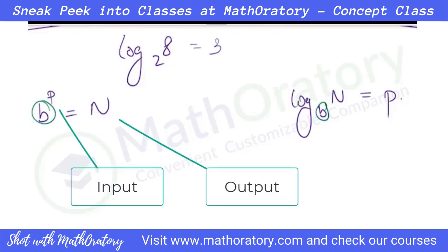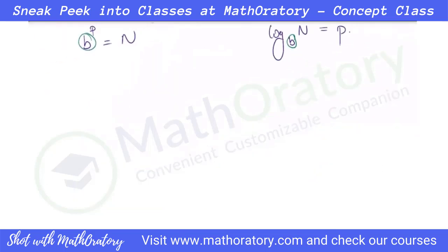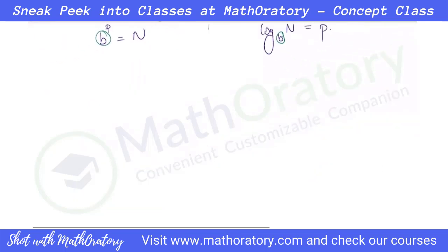If the power is the input and the number is the output, that is indices. And if the number is the input and the power is the output, that is log. Let us relate some of the properties here.